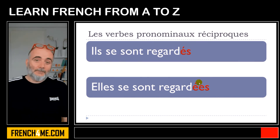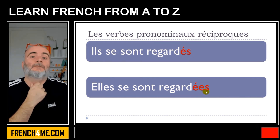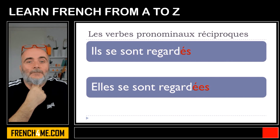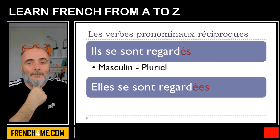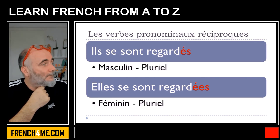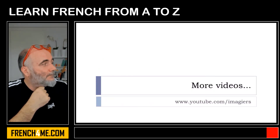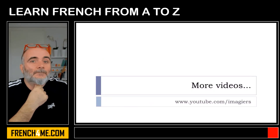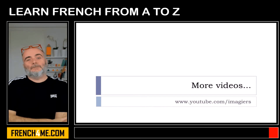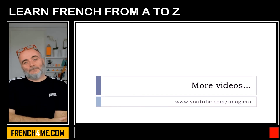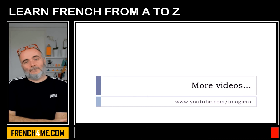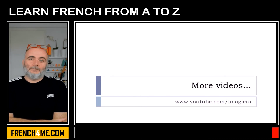Remember that we don't pronounce the final letters, so phonetically both regardés and regardées sound the same. But you should still write them correctly: masculine pluriel and feminine pluriel. I hope this was useful. We'll continue a little more in the next video on les verbes pronominaux. Have a great day — au revoir et à bientôt!